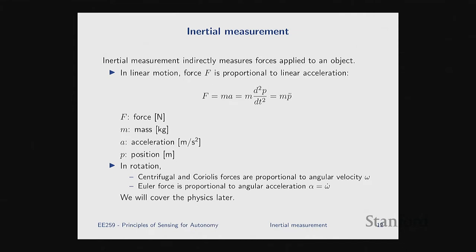For rotational motion, there are three forces that can cause it. The first two are the centrifugal and Coriolis forces, which are proportional to angular velocity omega. The third is the Euler force, proportional to angular acceleration. If you haven't heard of these, no worries — we'll develop them from first principles. If you have, it will be interesting to see how we use them to build sensors.